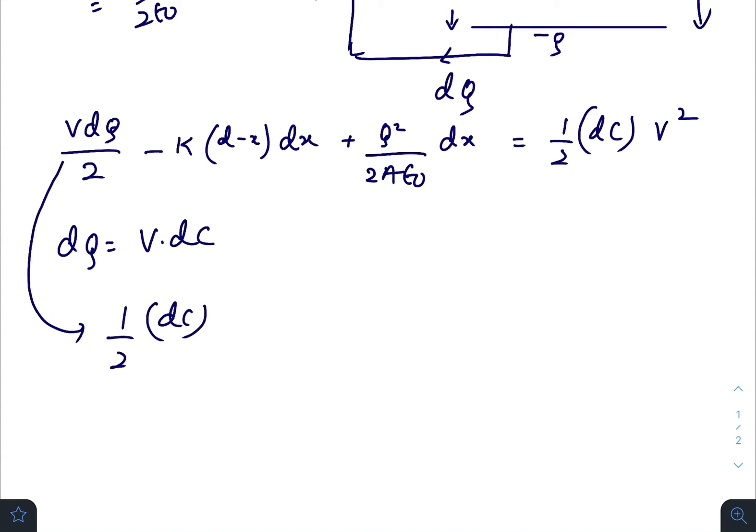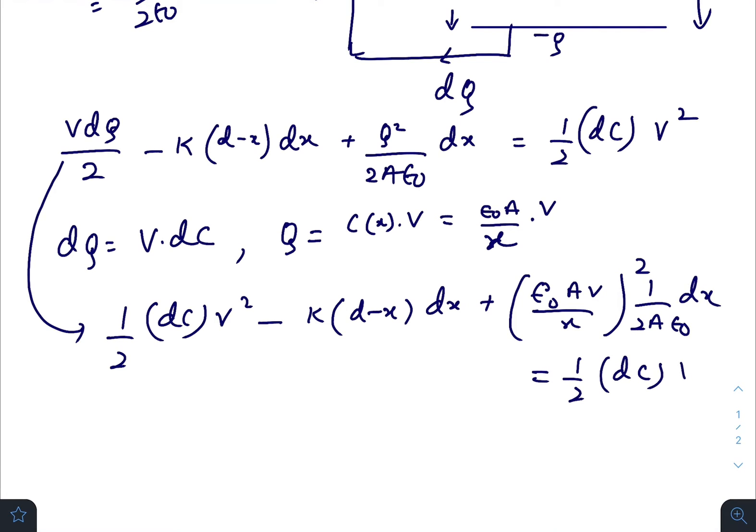So this equation becomes (1/2)dC·V² - K(D-X)·dx. Q will be equal to C times V, which is ε₀A/X times V. So it will become (ε₀AV/X)² divided by 2Aε₀·dx equals to (1/2)dC·V².